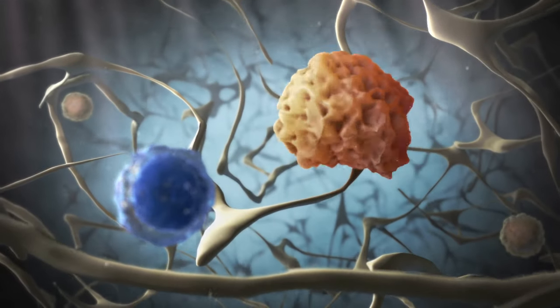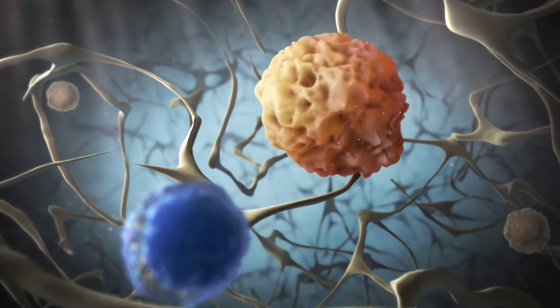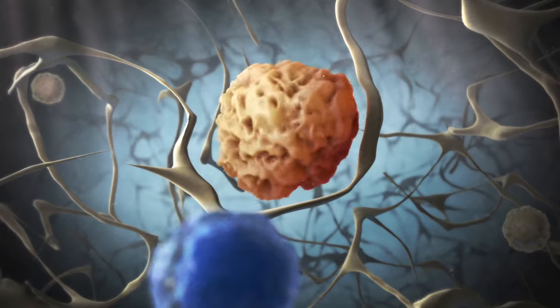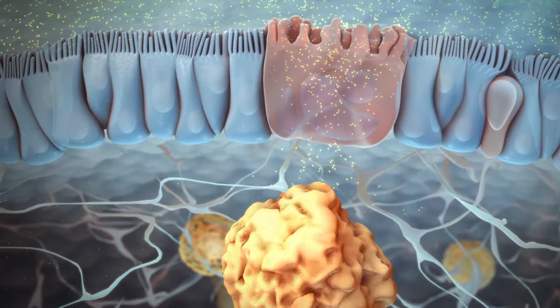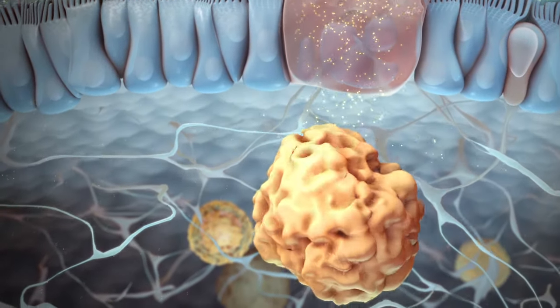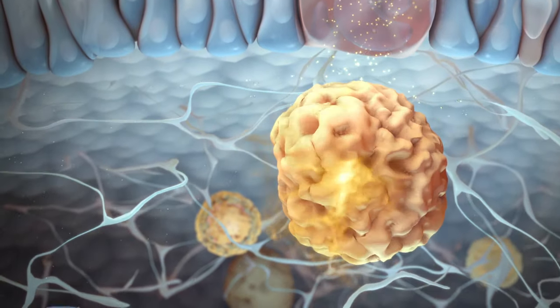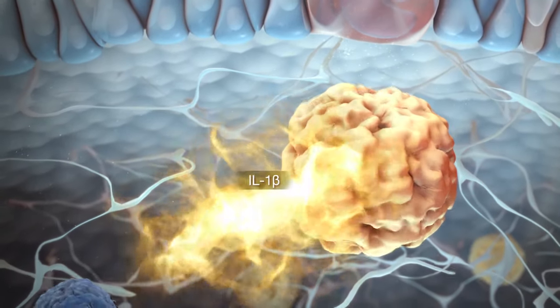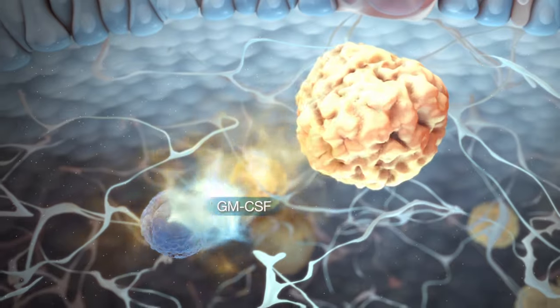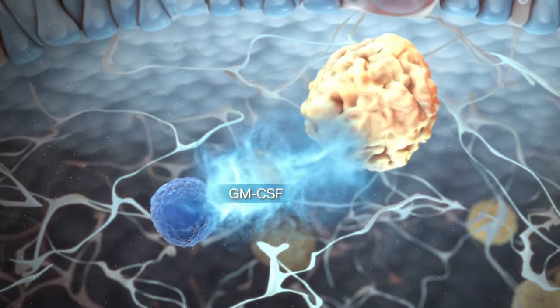ILC3s also interact with macrophages to establish tolerance towards the commensal microbiota. Antigen from gut bacteria induces the inflammatory cytokine IL-1-beta in macrophages, which in turn triggers the secretion of GM-CSF in ILC3s.